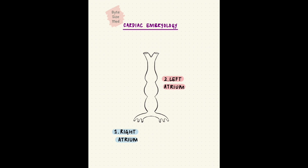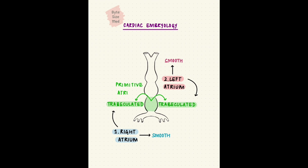The atria have rough anterior walls — the trabeculated parts — and smooth posterior walls. The trabeculated portions of both atria come from the primitive atrium of the heart tube. But the smooth posterior portions differ: in the right atrium, it's formed by the right horn of the sinus venosus, called the sinus venarum; and in the left atrium, it's formed by the absorption of pulmonary veins.